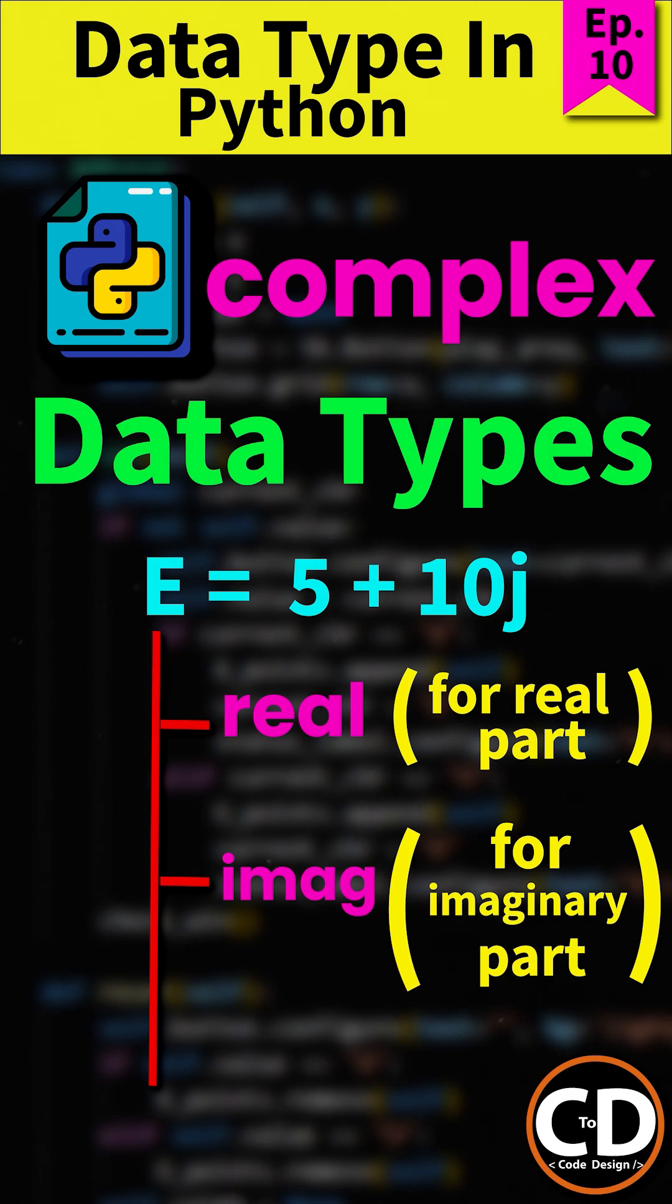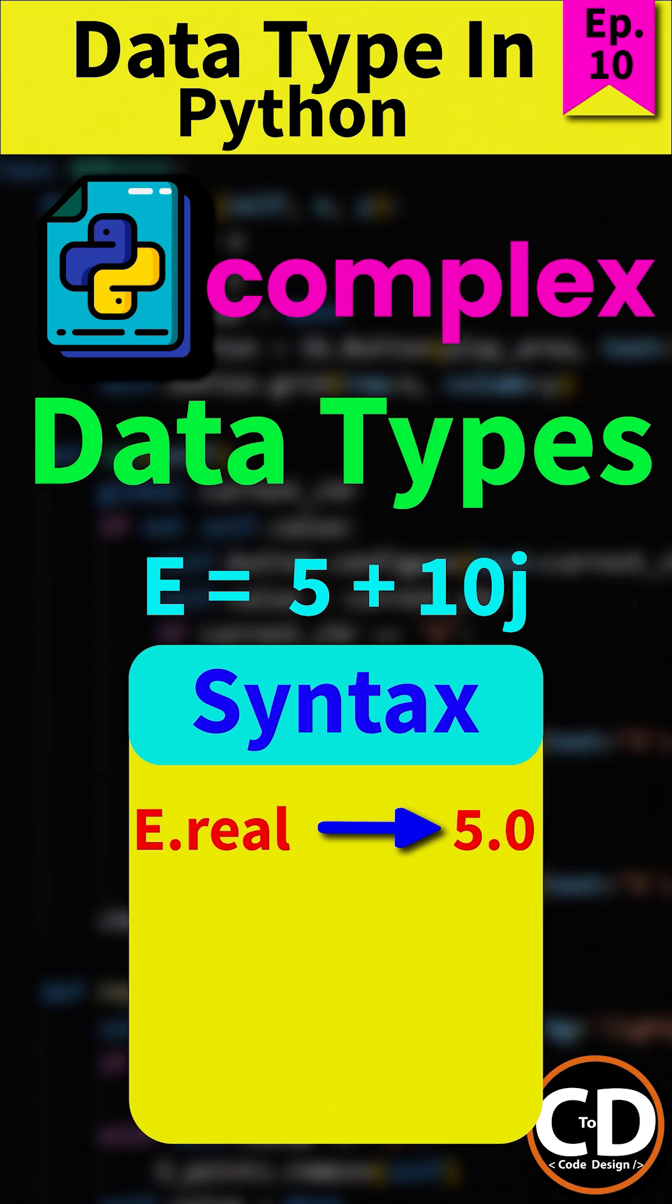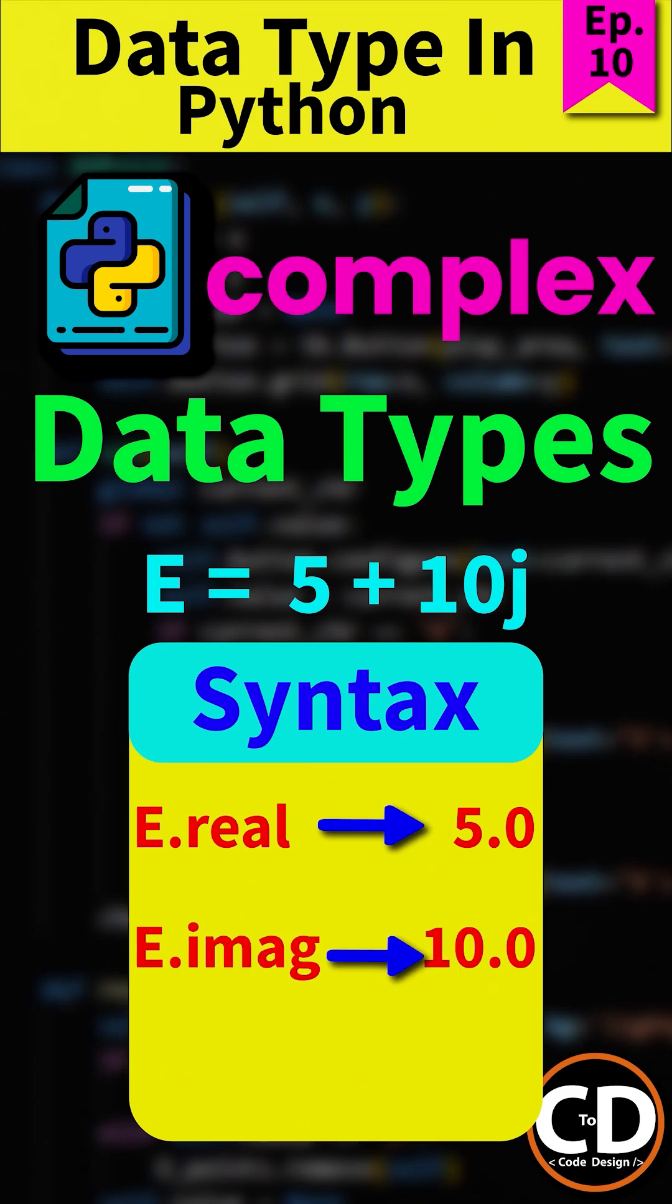So, the syntax for the extraction of the real parts is complex object dot real, which will give the real parts of the complex data type, and complex object dot imag will give the imaginary parts.